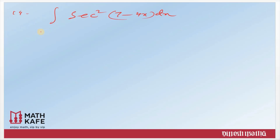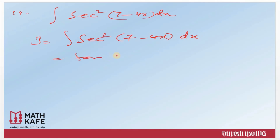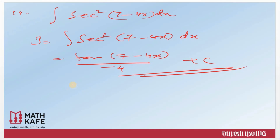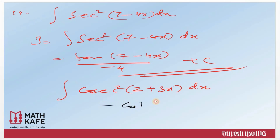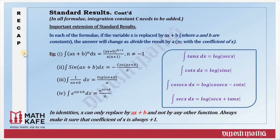For sec²(7−4x): you can write the answer straight away. The integral of sec²x is tan x, so ∫sec²(7−4x) dx = tan(7−4x)/(−4) + c — divide by the coefficient of x. Similarly, ∫cosec²(2+3x) dx = −cot(2+3x)/3 + c. Any question of that format can be done within seconds once you know the results.